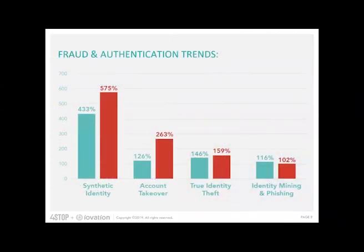Just to elaborate more on fraud trends — every year, Iovation publishes the Iovation Reputation Report, and you can see a massive increase in fraud types, especially around synthetic ID, account takeover, identity theft, and identity mining. The green represents all industries, while the red represents the increase in these fraud types in financial services — a result of massive data breaches and fraudsters combining personal information to create synthetic IDs and using it for identity theft. Account takeover is also on the rise because of credential stuffing through bot-related attacks and advanced phishing techniques.